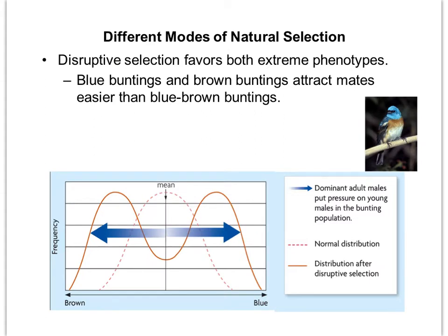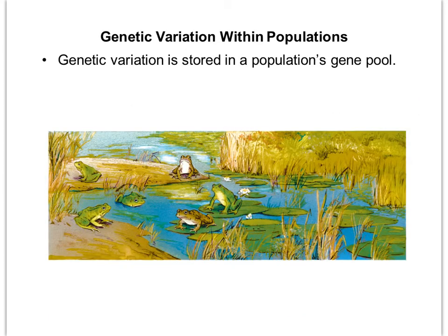Disruptive selection is whenever both extreme phenotypes are being favored. Our example is a type of bird called a bunting. There are three color variants: all blue, all brown, or a brown-blue mixture. The brown-blue buntings don't attract mates very well, so their numbers go down while the all-blue and all-brown ones respectively go up. That's why we end up with a bimodal, wavy curve.